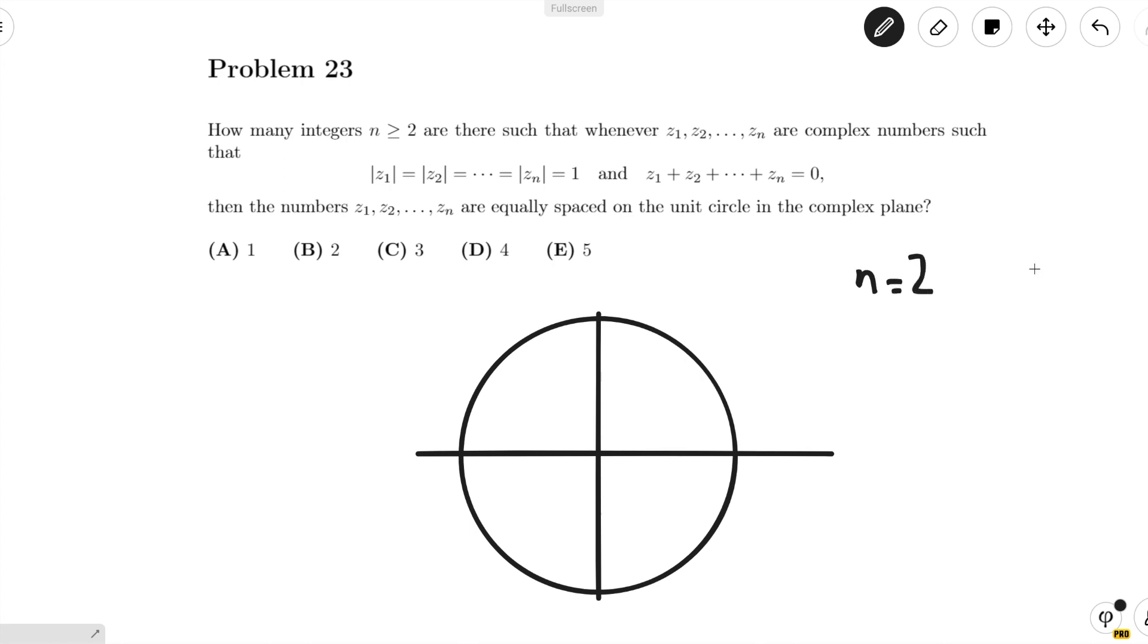Now when n equals 3, we have to do something a little bit more clever. So if we pick any z₁ on the circle, we can make our calculations easier if we rotate everything such that z₁ is at 1.